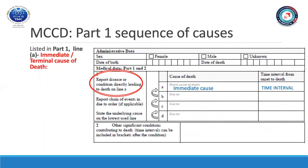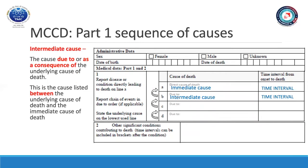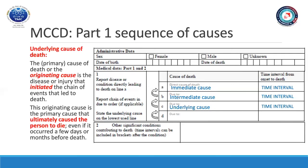In Part 1, line A, you list the immediate or terminal cause of death. The immediate cause is a term used to describe the terminal illness or final condition that led to death of a person. After the immediate cause, you report the intermediate cause or causes — if there are multiple — in lines between the immediate and tentative underlying cause of death. The intermediate cause is a cause due to or as a consequence of the underlying cause of death. The tentative underlying cause of death is the primary cause — the originating cause — the disease or injury that initiated the chain of events that led to death. This originating cause is the primary cause that ultimately caused the person to die, even if it occurred a few days or months before death.